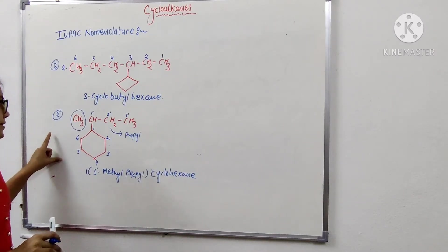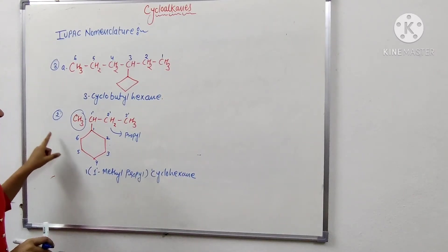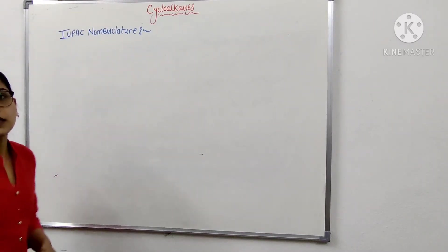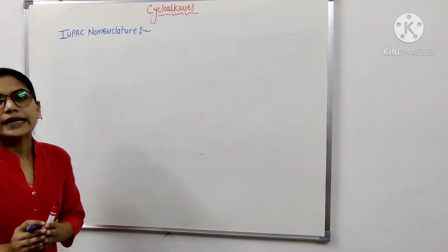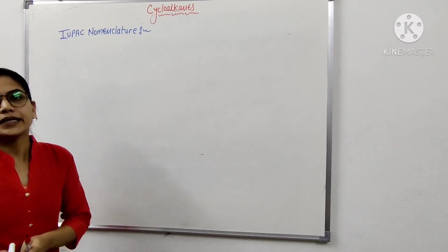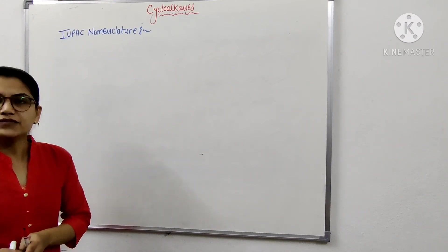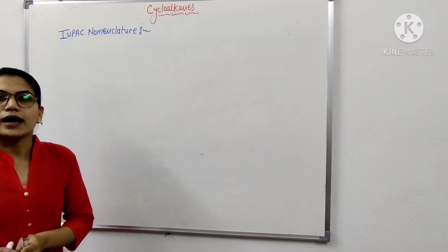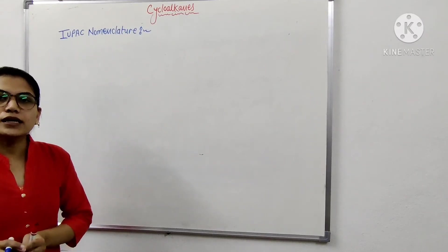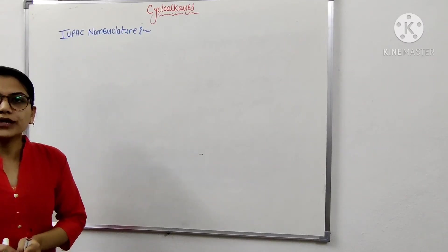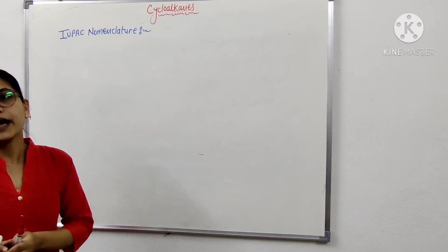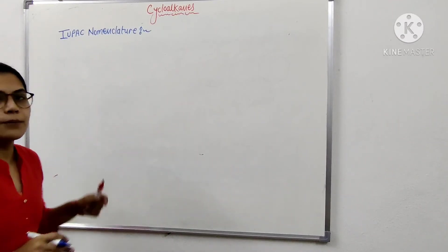This is the second example of IUPAC nomenclature. The next point is: if the number of carbon atoms in the ring as well as the side chain are the same, preference is given to the ring and the side chain is considered as a substituent.